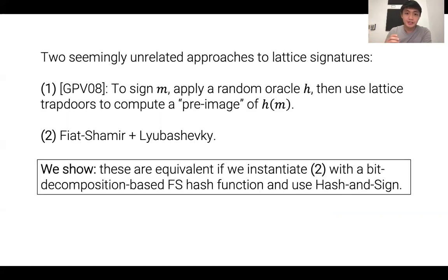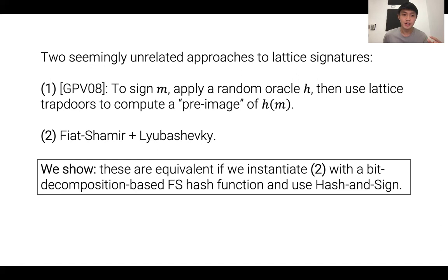Going further, there are essentially two seemingly unrelated approaches to lattice-based signatures: the GPV-based approach using pre-image sampleable functions, and the Fiat-Shamir-based approach by applying Fiat-Shamir to Lubaczewski. We show these two previously unrelated approaches are actually equivalent if you instantiate Fiat-Shamir with a particular bit-decomposition-based hash function and then apply hash-and-sign with a random oracle. This is a fun connection uncovered by thinking about Fiat-Shamir with simple hash functions.